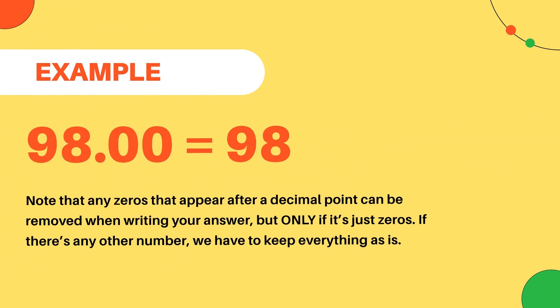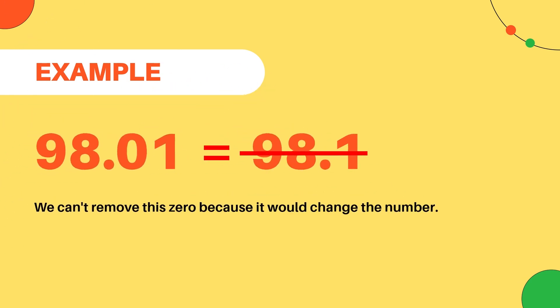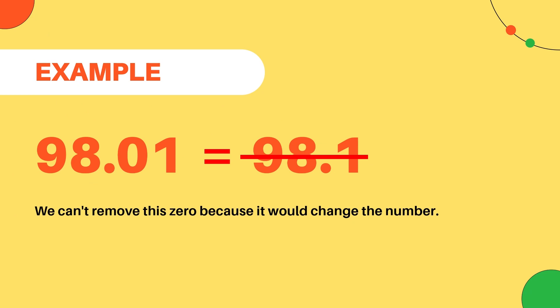Note that any zeros that appear after a decimal point can be removed when writing your final answer, but only if it's just zeros. If there's any other number, we have to keep everything as it is. This allows us to write 98.00 as just 98. However, if our answer were 98.01, we would not be able to remove any digits after the decimal point without changing the number.